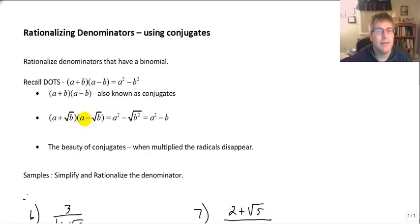So a plus radical b times a minus radical b equals a squared minus radical b squared, while radical b squared is b. So that's going to get rid of our square roots. That's the beauty of conjugates. When we multiply something by a conjugate and it has radicals in it, the radicals will disappear.